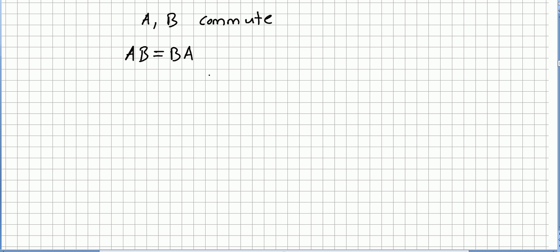Of course this condition applies only for square matrices of the same order. Otherwise this could not happen. So the matrices, they have to be matrix A and matrix B, they have to be n by n.